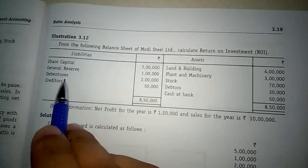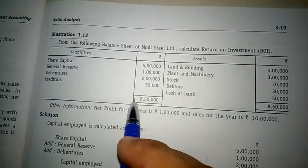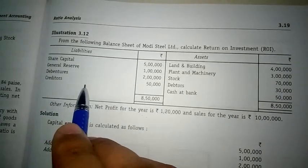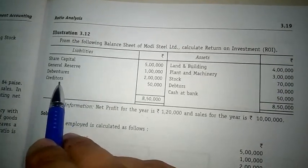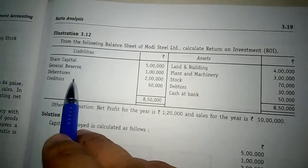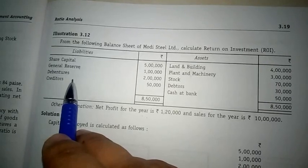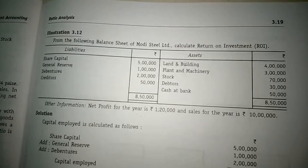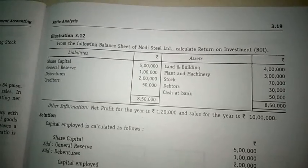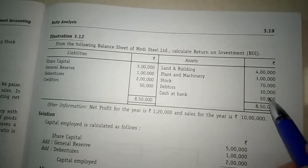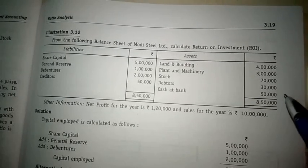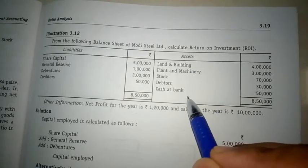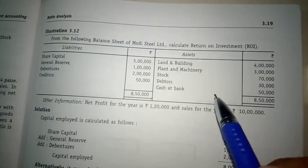From the total of shareholders' fund and long-term debt, we deduct preliminary expenses and other non-operating investments if any. In this problem, they have given share capital, general reserve, debentures, and creditors. Capital employed is essentially the total of all liabilities except current liabilities. Since creditors are current liabilities, we exclude them to get gross capital employed. We then check the asset side for any preliminary expenses or non-operating investments.